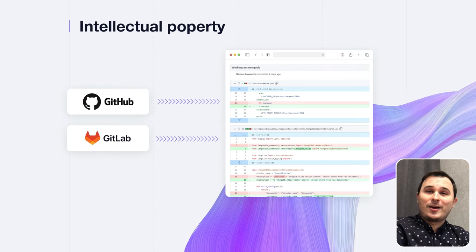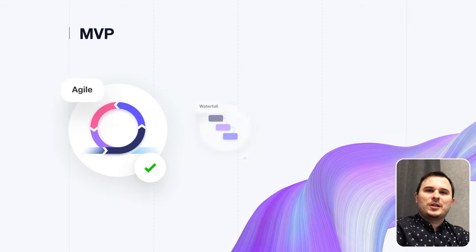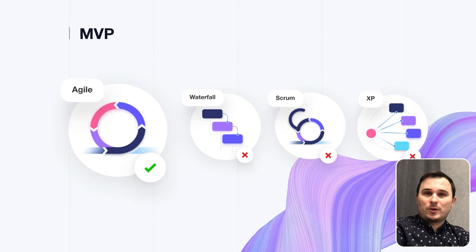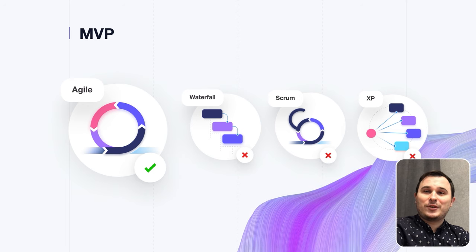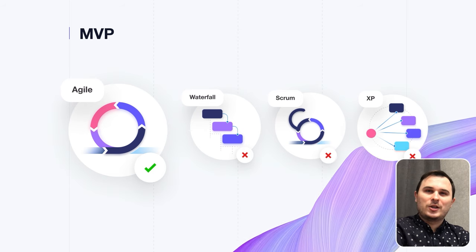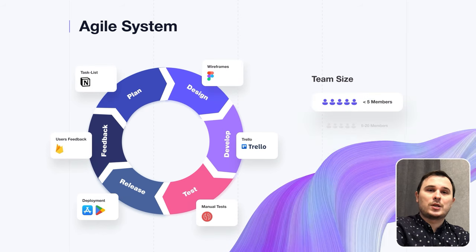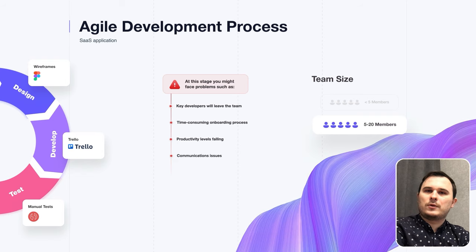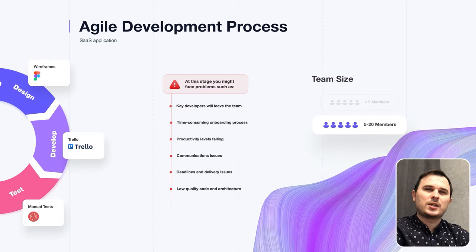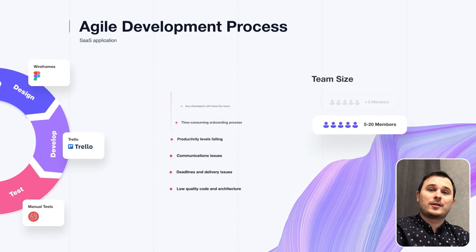For your MVP, I recommend utilizing the Agile process — one of the most powerful methodologies that can significantly speed up your development process. However, in some situations it can actually slow down your project by up to 30%. With a small team of five developers using simple tools like Trello, Notion, Miro, Asana, Monday, Google Docs, and quick Zoom meetings, Agile works well. However, as your team expands to 15 or more people, you may face challenges such as losing key developers, complex onboarding processes, reduced productivity, communication issues, missed deadlines, and a decline in code quality.